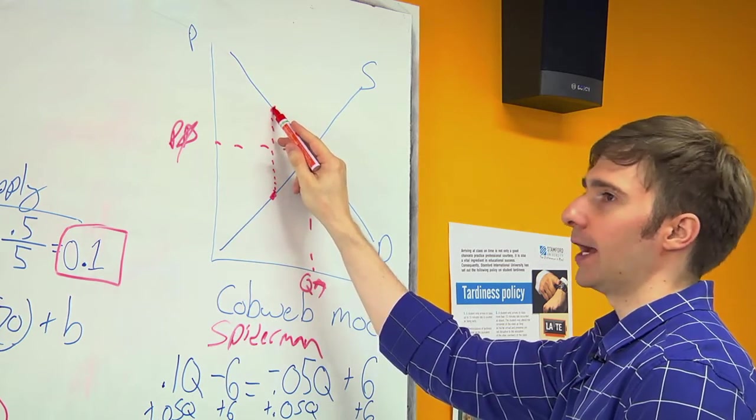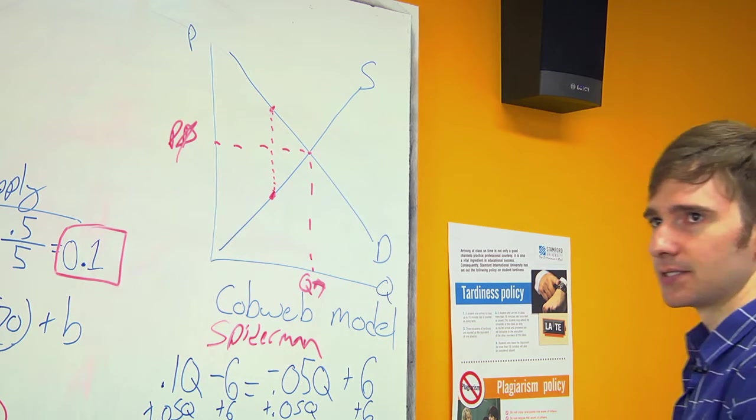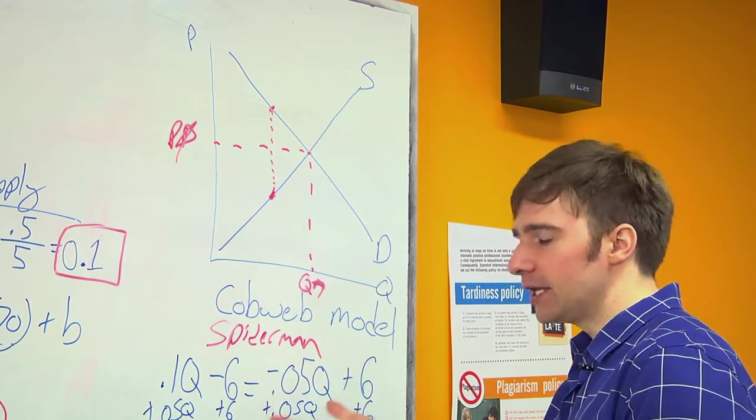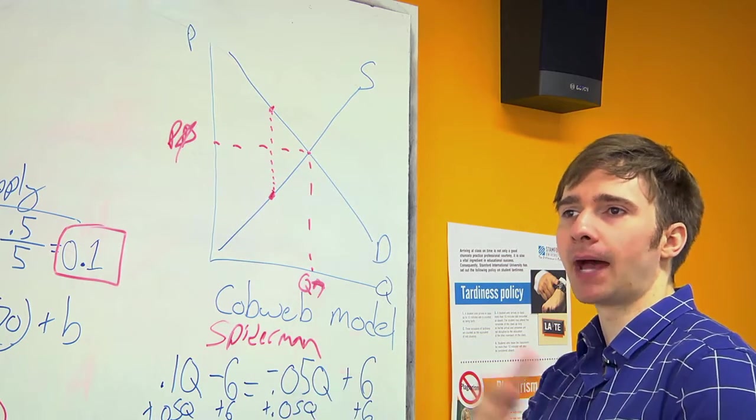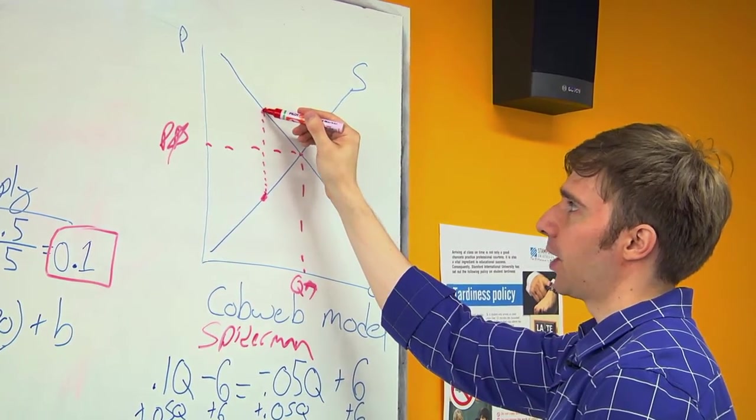When the farmer gets this price and it's time for him to grow his crop the second season, in this model, he only has a memory back one season. And he remembers, oh, last season I got this nice high price.